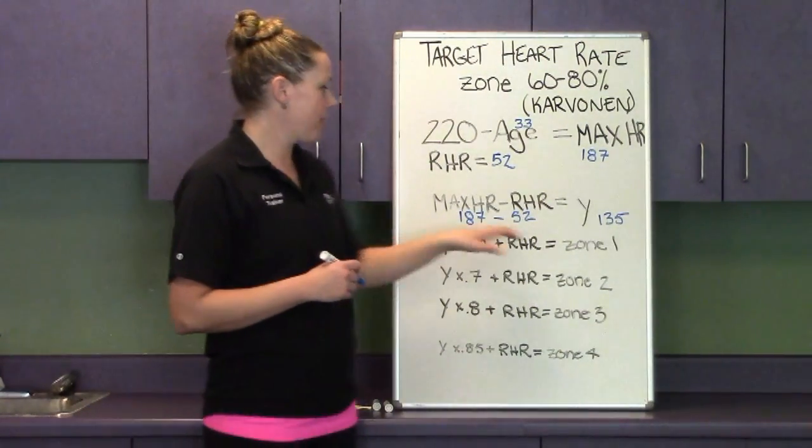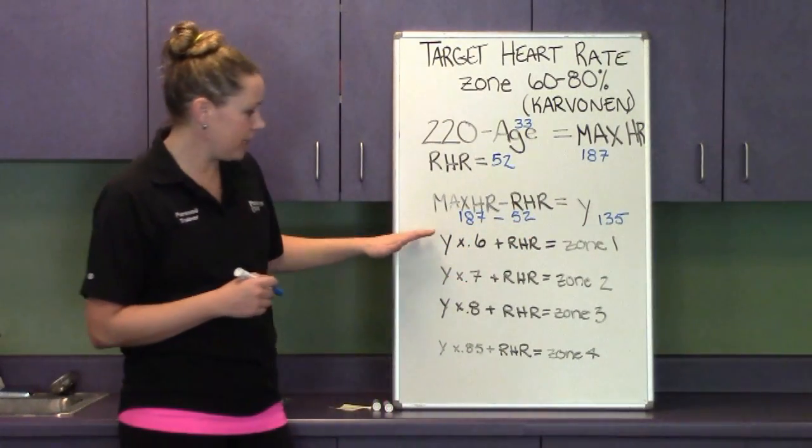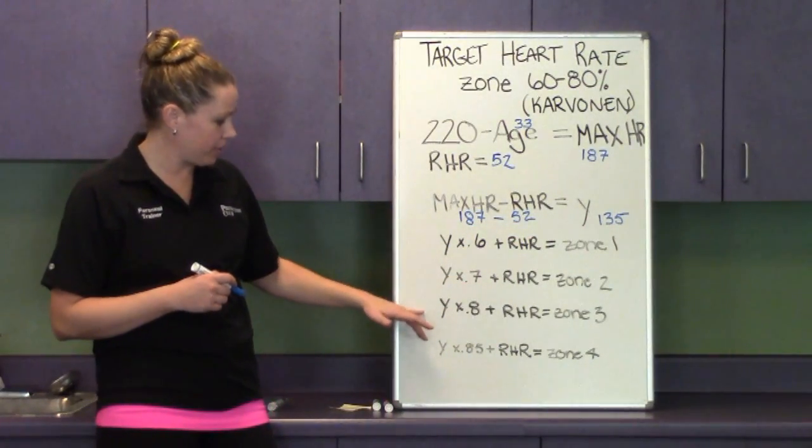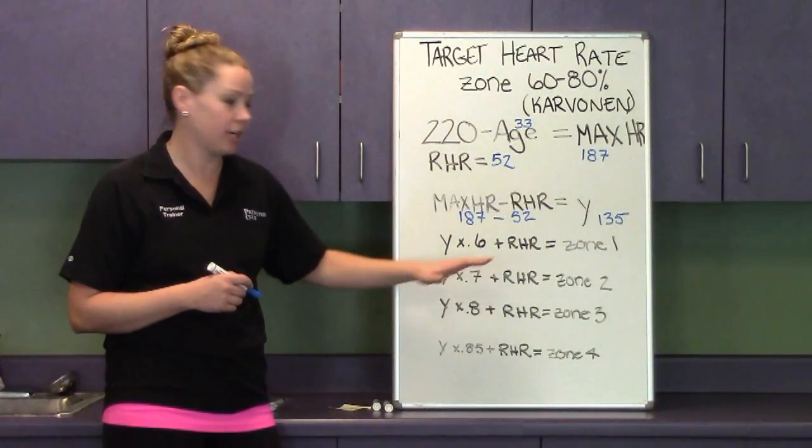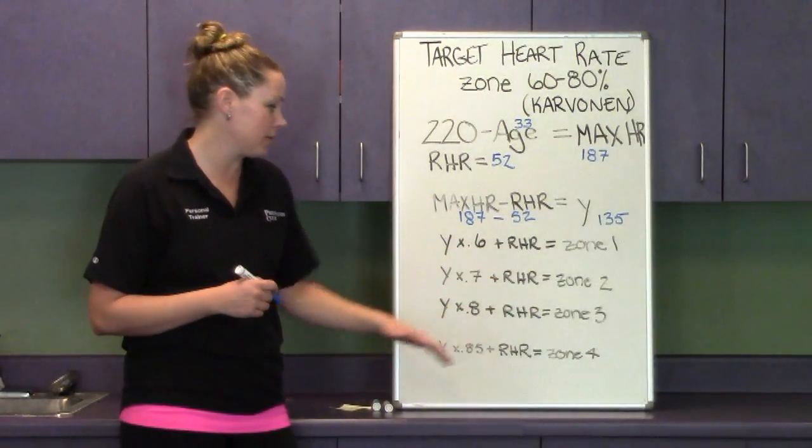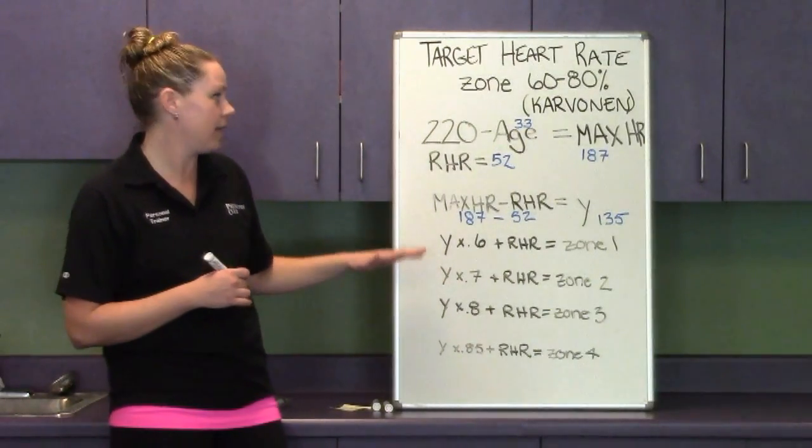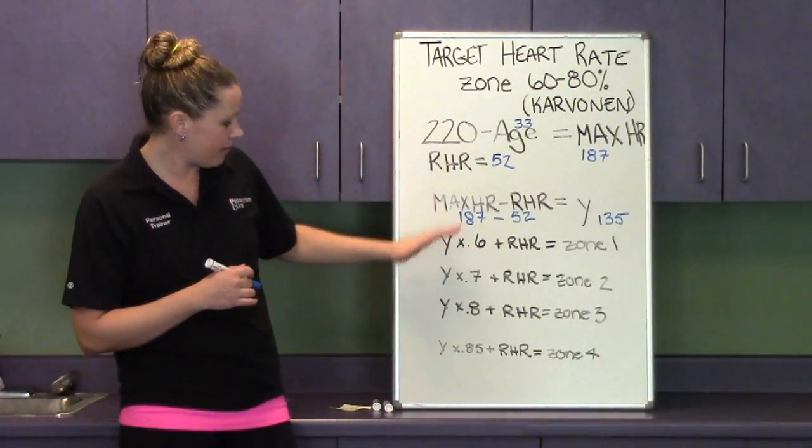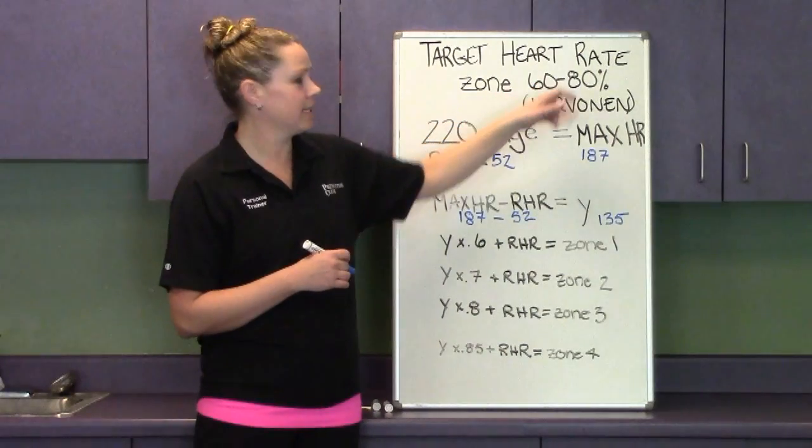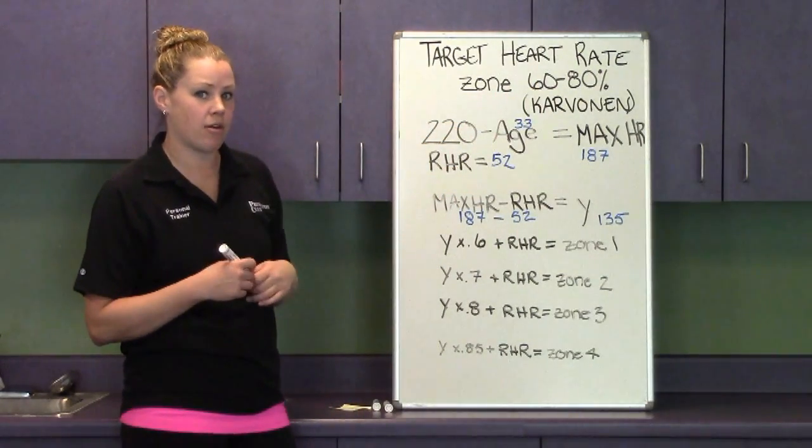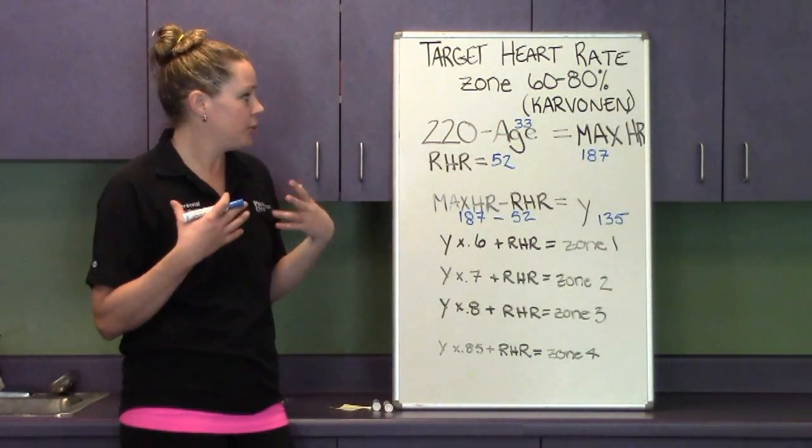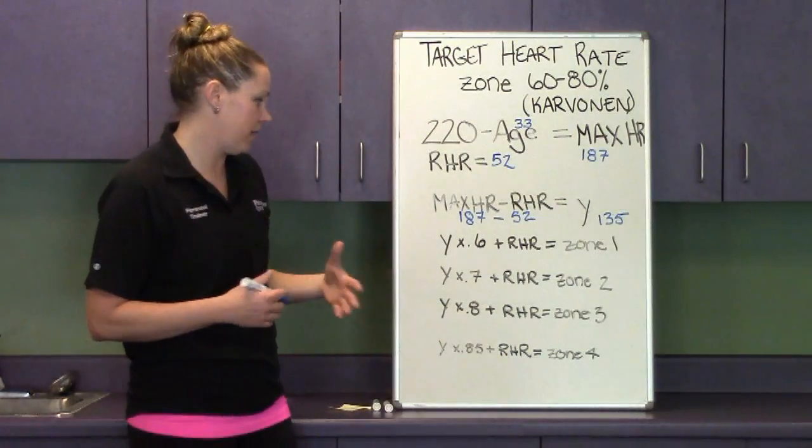Now we're going to take that 135, and we're going to plug it into four separate equations, which are going to give us four separate zones. These zones are a percentage of your heart rate. So based on the levels we want to work at, we want to work at about 60 to 80 percent of our heart rate when we are doing certain cardiovascular activities.